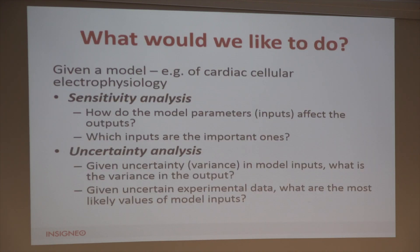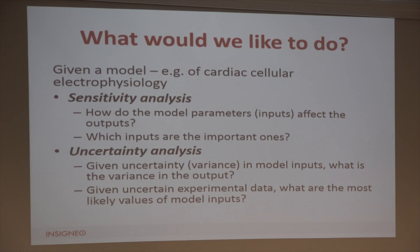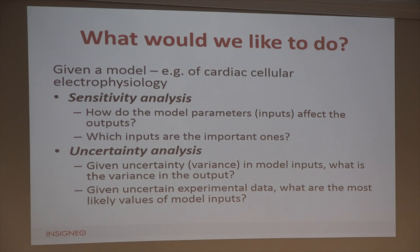What are the kinds of things we'd really like to do? If we have a cardiac cellular electrophysiology model, we'd like to answer questions like: for sensitivity analysis, how do model parameters or inputs influence outputs — which ones do we really care about measuring precisely? And given some uncertainty in our model inputs, how does that affect variance in the outputs? If we have some experimental data, can we go backwards to estimate what model parameters are consistent with those observations?